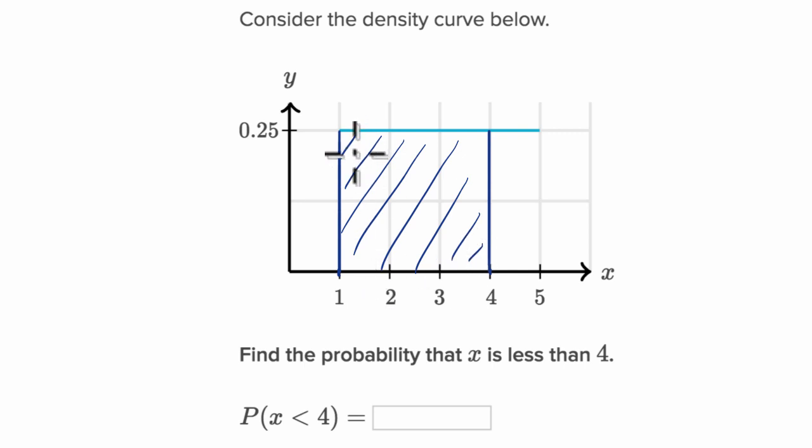Well, this is just a rectangle where the height is 0.25 and the width is one, two, three. So our area is going to be 0.25 times three which is equal to 0.75.